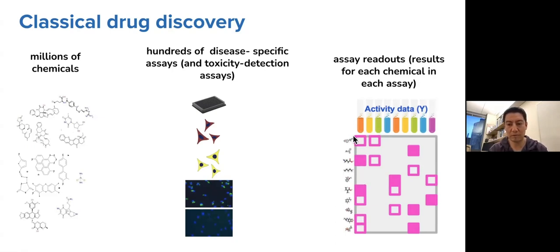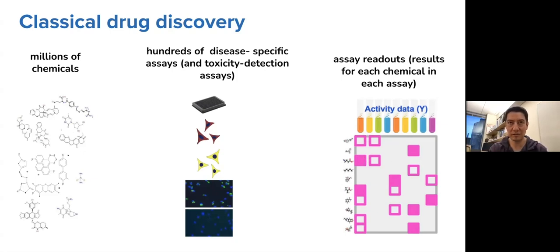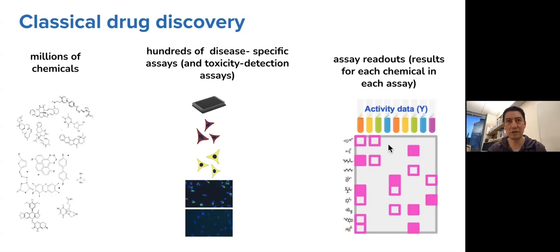In practice, we only have some of the compounds tested. Think of this as a matrix with compounds in rows and activity assays in columns. The scientific community has run experiments testing some compounds for some bioactivities of interest, but we don't have complete knowledge of which compounds are useful for which diseases. For those that have been tested, sometimes they work, but sometimes the compound doesn't display the activity of interest — a sparse knowledge base.